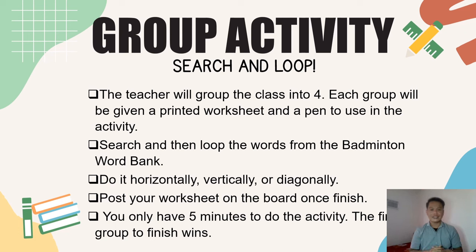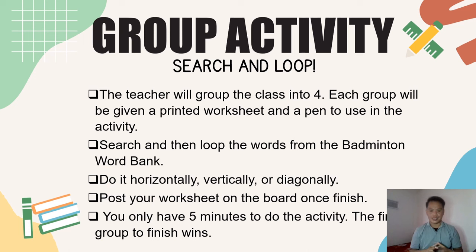The activity is entitled 'Search on the Loop.' I will group the class into four. Each group will be given a printed worksheet and a pen to use in the activity. You are going to search and remove the words from the badminton word bank — horizontally, vertically, or diagonally. After finding all the words, post your worksheet on the board. The first group to finish wins.